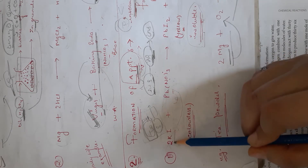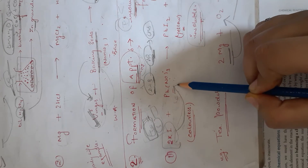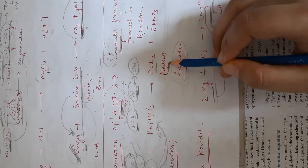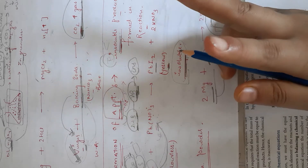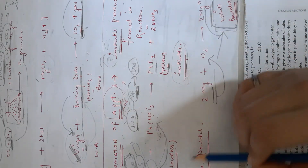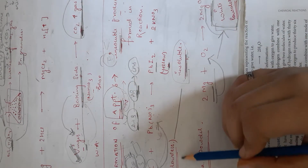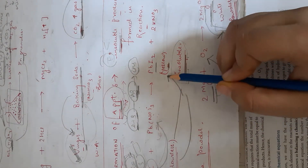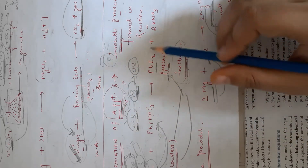When potassium iodide reacts with lead nitrate, it forms lead iodide, which is yellow in colour and insoluble. So two types of changes are occurring here: a change in colour from colourless to yellow, and the formation of an insoluble precipitate.